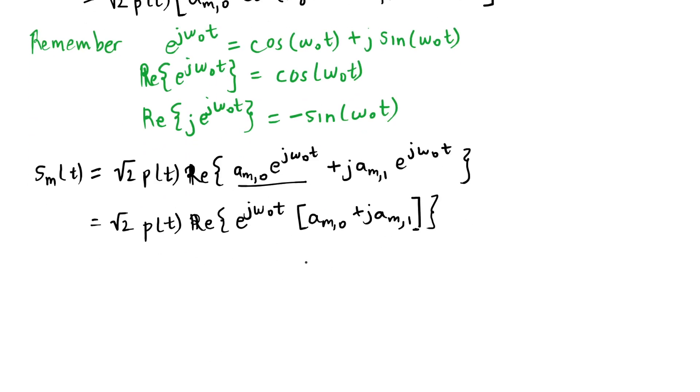And what we're simply going to do is we're going to call this part s_m complex baseband. It's now a complex value we're going to call that complex value a_m,0 plus j times a_m,1.